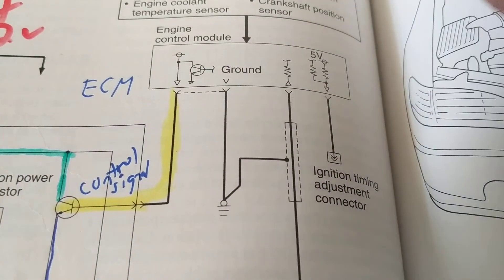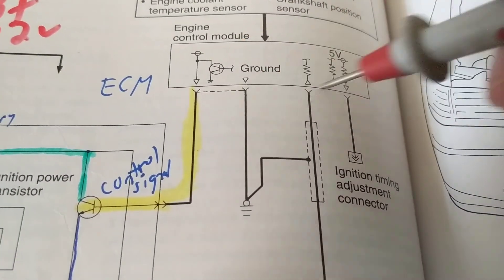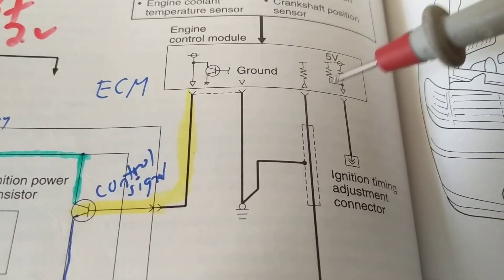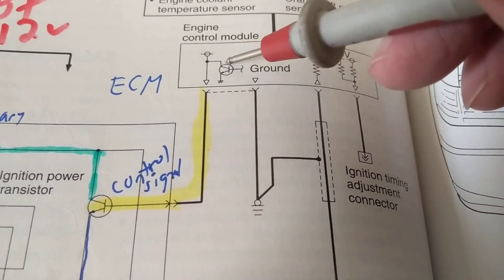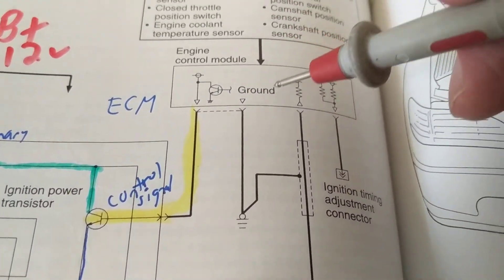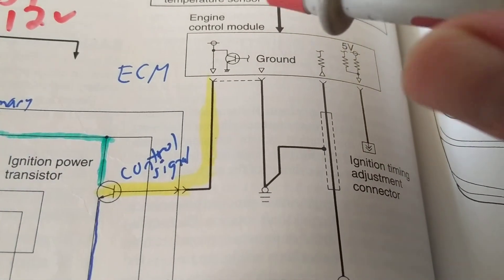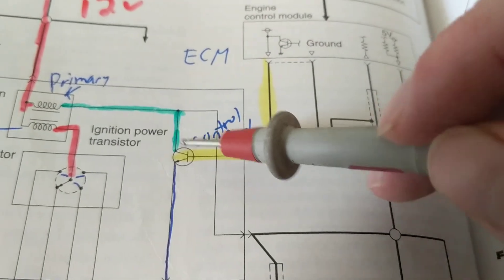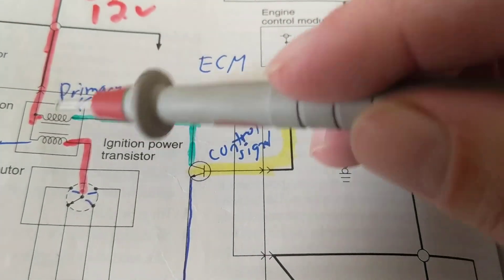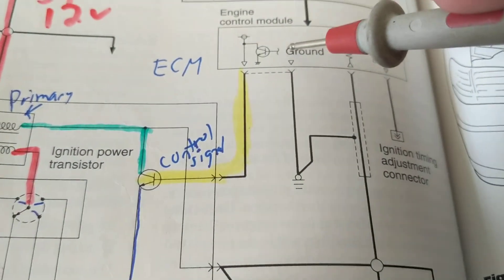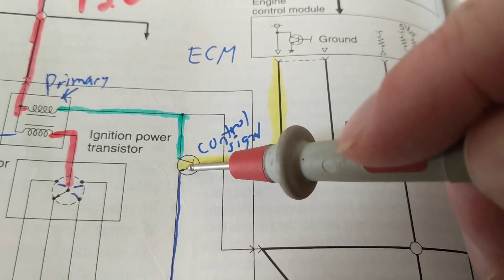In previous videos I showed you computers. These are the things inside the computer that we don't see — they're internal. The resistors and the transistor are inside this module. This computer decides when is the perfect time to turn this on and off. When it turns on, current flows through the primary and a magnetic field builds up.